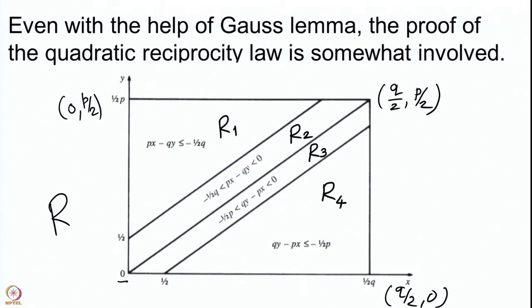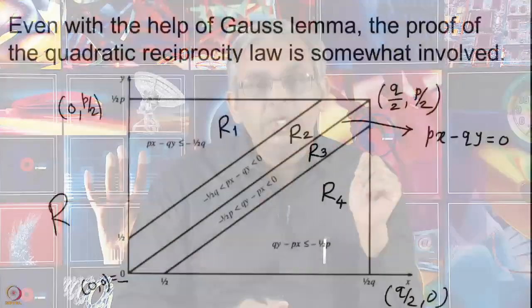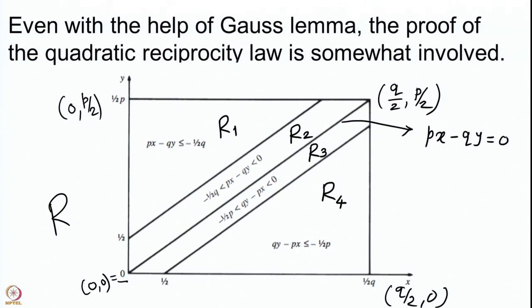The diagonal line passes through (0,0) and (q/2, p/2), so its equation is px - qy = 0. The line parallel to it through the point (0, 1/2) has equation px - qy = -q/2, since the x-coordinate is 0 giving p·0 - q·(1/2) = -q/2. Similarly, the parallel line through (1/2, 0) has constant term p/2, giving equation px - qy = p/2.